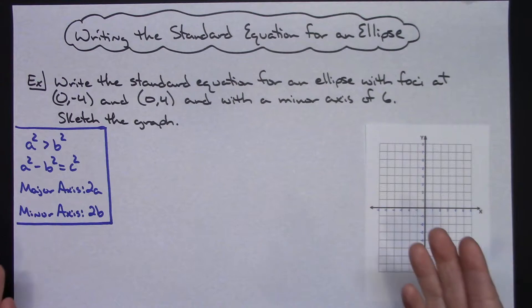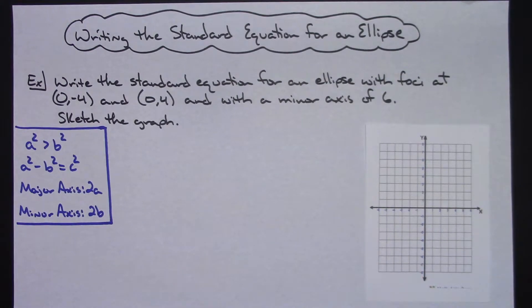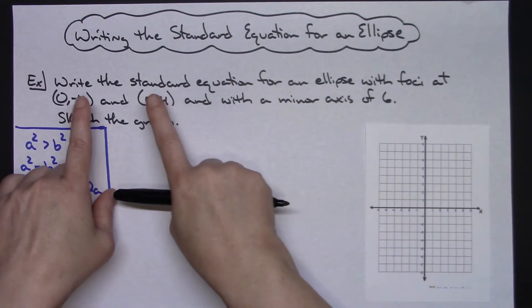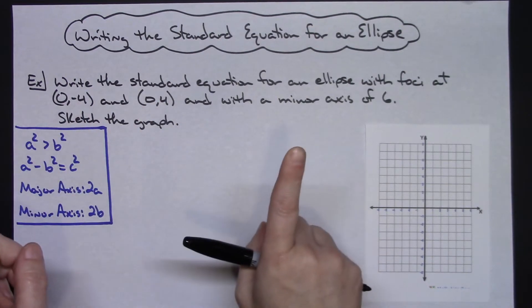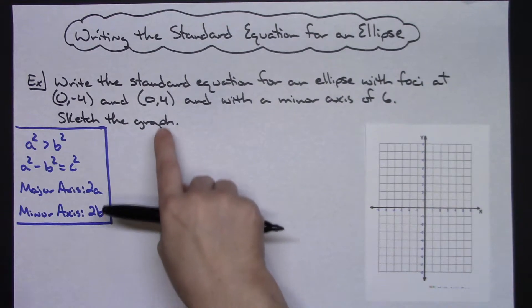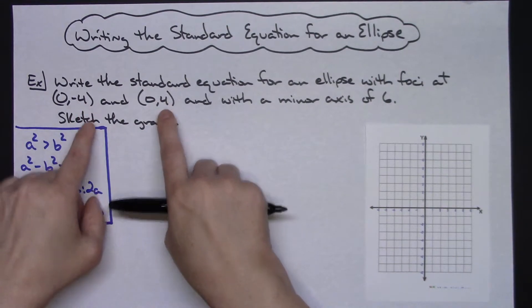Now your goal probably needs to be to find your A, B, and C variables. Well as soon as they tell you that you've got a focus located at (0, -4) and (0, 4), that immediately tells you that your focus or your C variable is going to be 4.